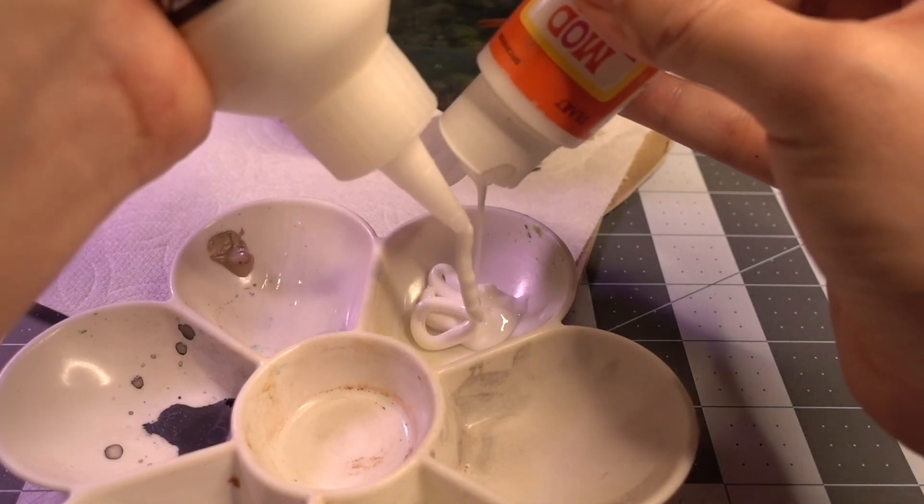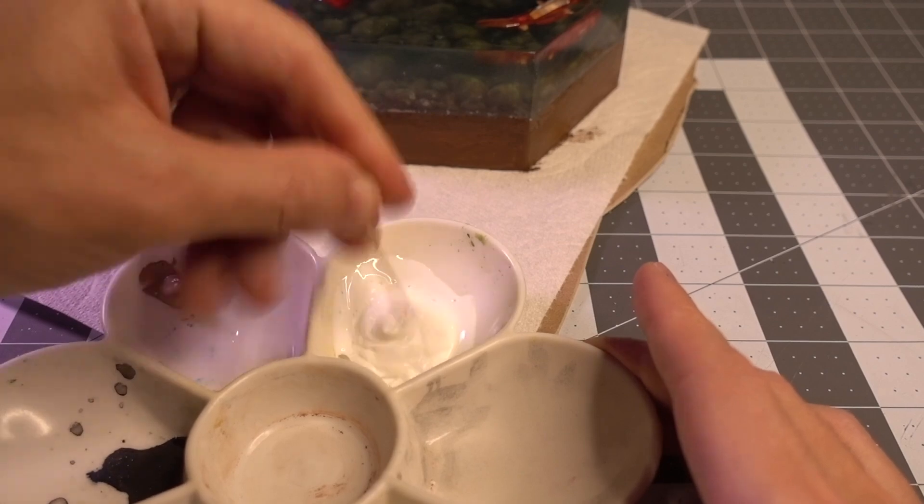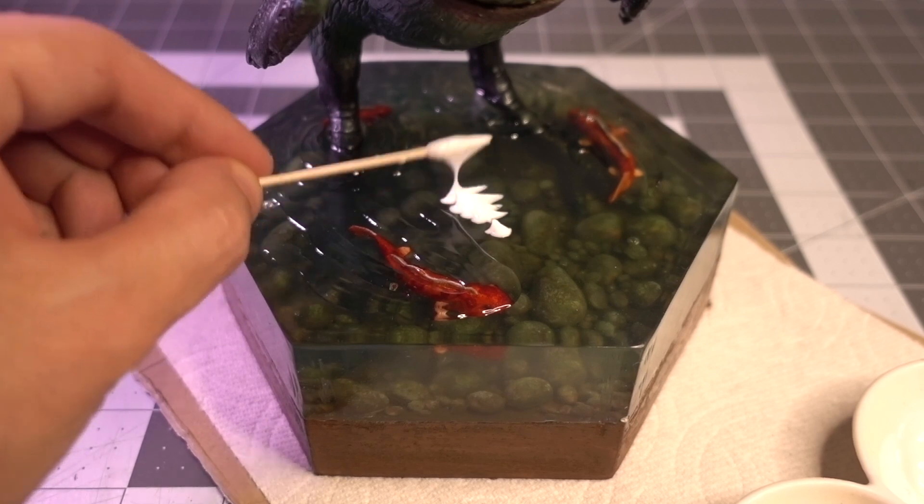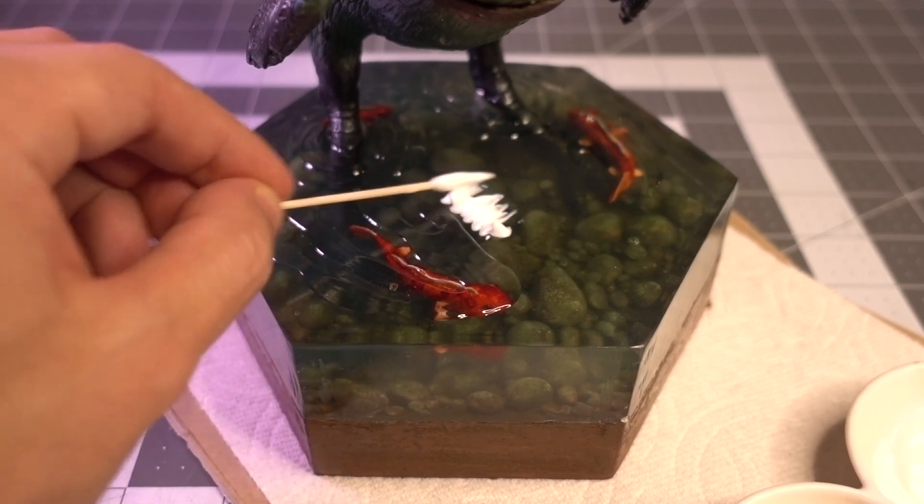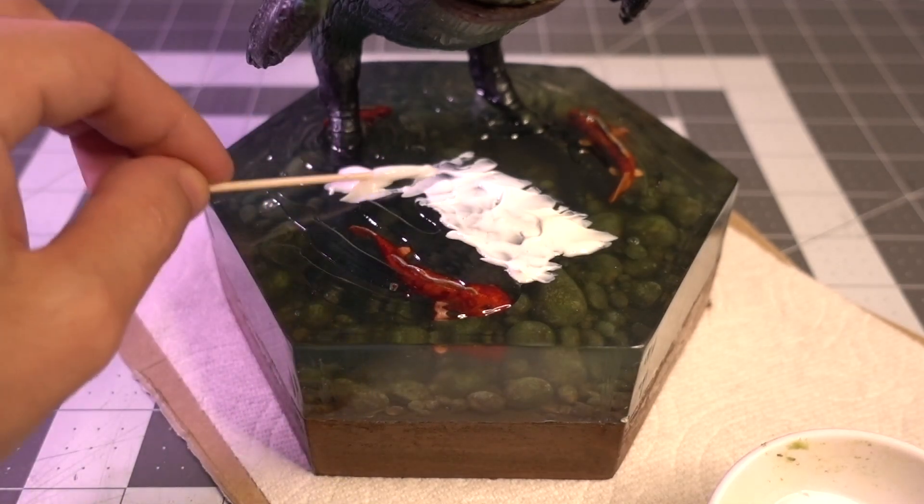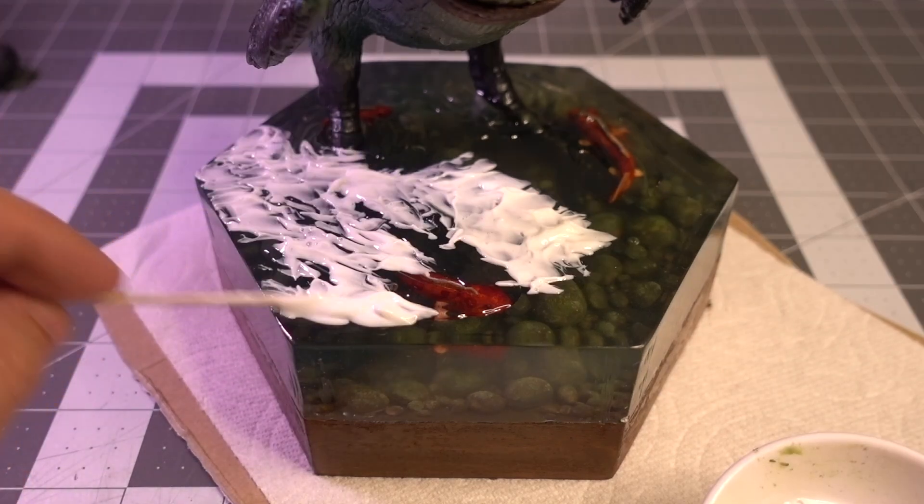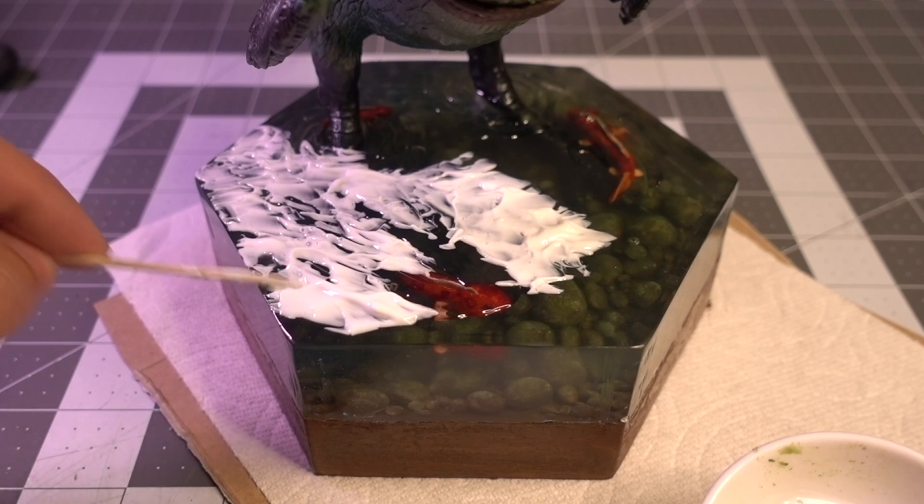Even with the ripples, the water surface was still a little too glossy for my liking, so I decided to add this water effect, mixing glossy Mod Podge with this scenic water effect paste. The paste by itself was too thick, while Mod Podge is the consistency of yogurt you forgot in your trunk for an afternoon, but when combined, they created just the right texture.